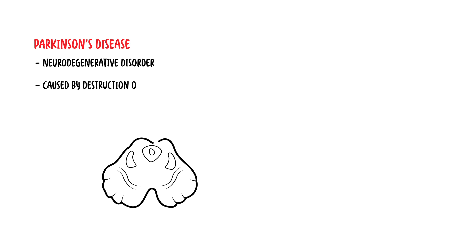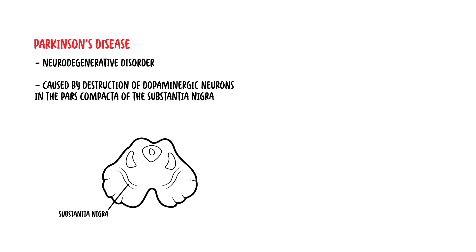Now let's look at some clinical anatomy, or clinical cases related to the anatomy we have learned, beginning with Parkinson's disease. Parkinson's disease is a neurodegenerative disorder that is caused by destruction of dopaminergic neurons in the pars compacta of the substantia nigra, located in the midbrain.